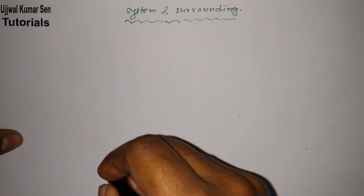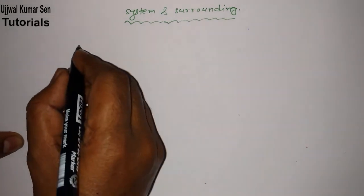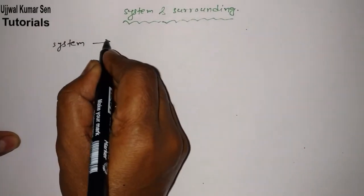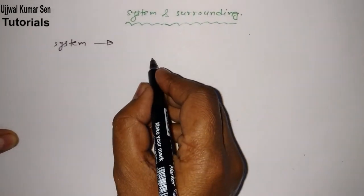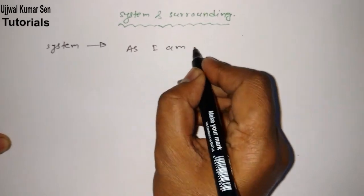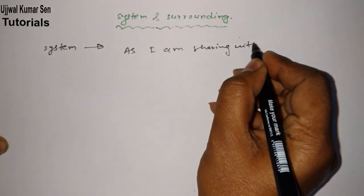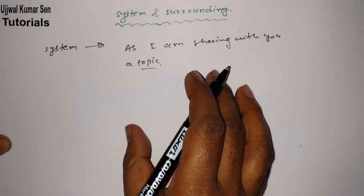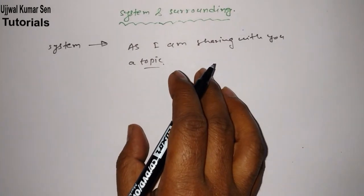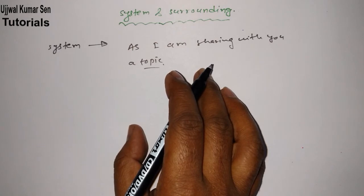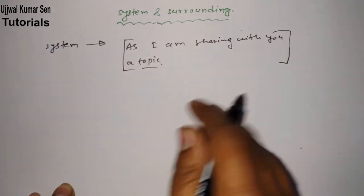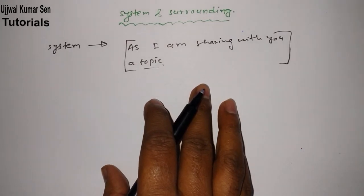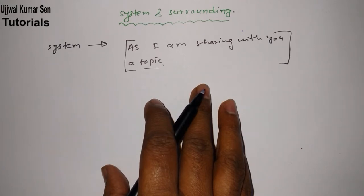Basically, what is a system? As I am sharing with you this topic right now — system and surrounding — my focus is on this topic only. So that means this is a system. Suppose that you are watching my videos on YouTube using your device — that is a system. Suppose that someone is cooking in the kitchen — that is also a system.